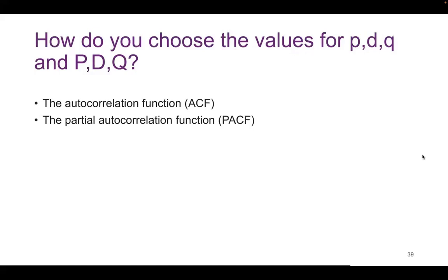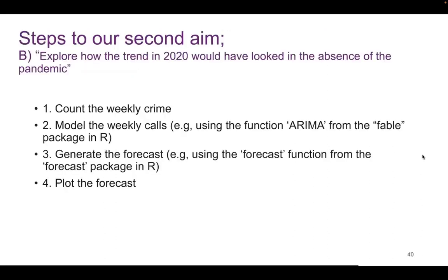That is a full structure and breakdown of a SARIMA model. Let's have a look at how we can apply this SARIMA model to answer our second aim. I've created a step-by-step guide on how to go about answering this aim. The first step is to count the weekly crime — this was back at the beginning where we decided on the time interval. Once this time interval has been decided, you aggregate your data to that weekly crime rate. The next step is to model the weekly calls using the ARIMA function from the Fable package, which we'll be doing on Thursday. Then we generate the forecast from these models, and finally, the last step involves plotting the forecast — making those visualizations.